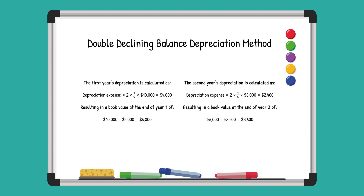Let's look at an example. Imagine a company buys a piece of machinery for $10,000 with a five-year lifespan. They opt for the double declining balance method. The formula for this is two times the depreciation rate times the current book value.